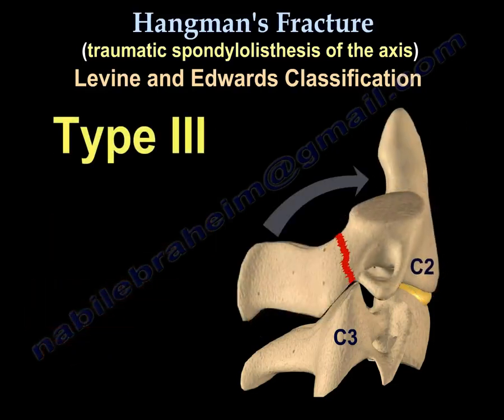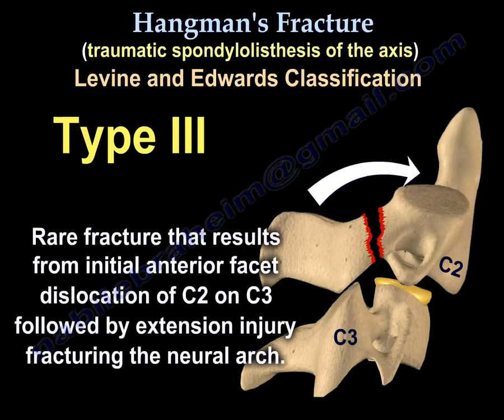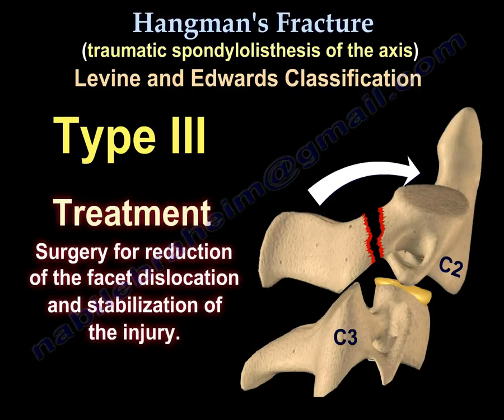Type 3 involves C2-C3 facet dislocation. It is a rare fracture that results from initial anterior facet dislocation of C2-C3, followed by extension injury fracturing the neural arch. It results in translation, usually with a bilateral facet dislocation of C2-C3. It is an unstable fracture. Treatment is surgery for reduction of the facet dislocation and stabilization of the injury.